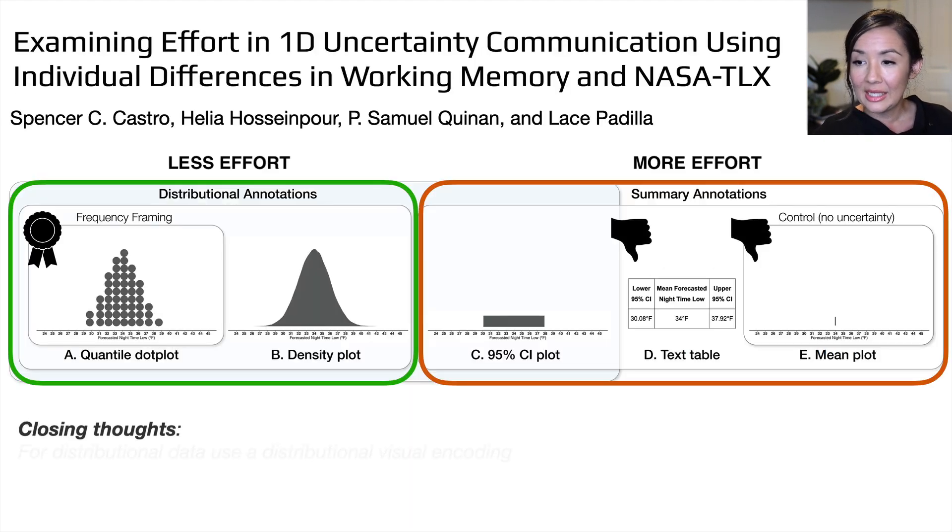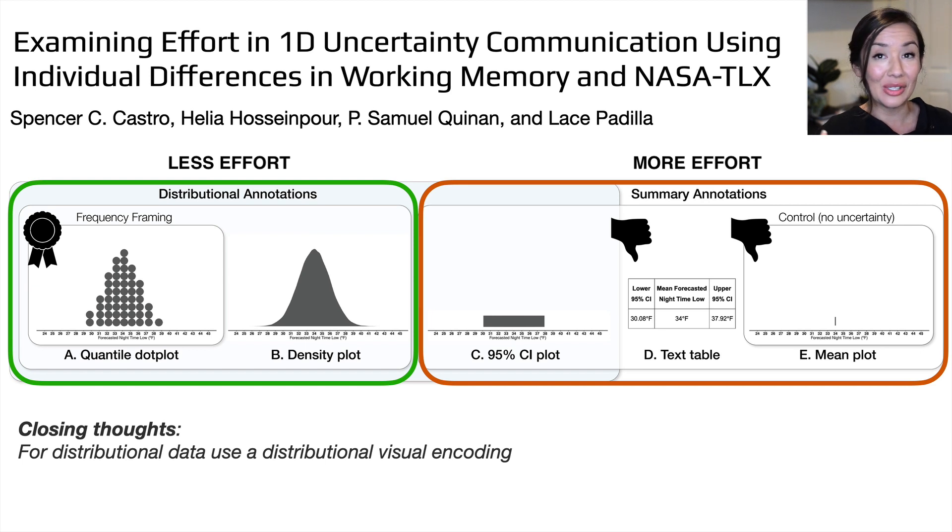So in terms of closing thoughts, if you have distributional data, consider using a distributional encoding. It seems very simple, but that's not the approach that a lot of people are using. A lot of people seem to think that text works really well or you can just show the mean because uncertainty is too complicated. That's certainly not what we find. We find consistently that uncertainty helps and people have a very good intuition for understanding these density distributional visualizations. Even though they seem more complicated, they're pretty intuitive for people to understand. Conveying uncertainty is useful. In particular, this mean plot that didn't show any uncertainty was one of the hardest ones to use. So when you hear a claim that uncertainty is actually harder for people to understand, I don't think that's always the case. It does turn out to be useful in these situations.